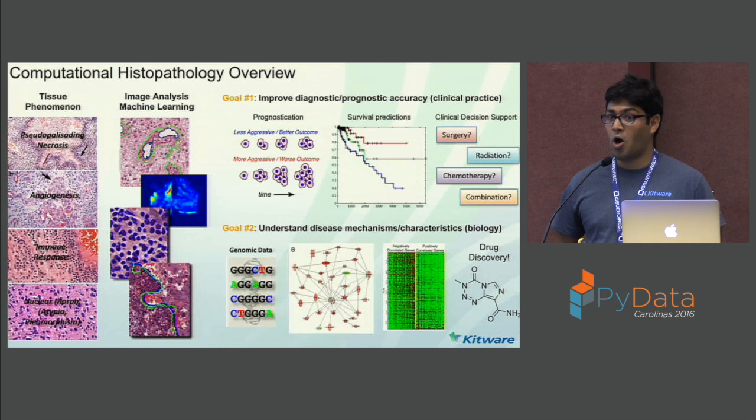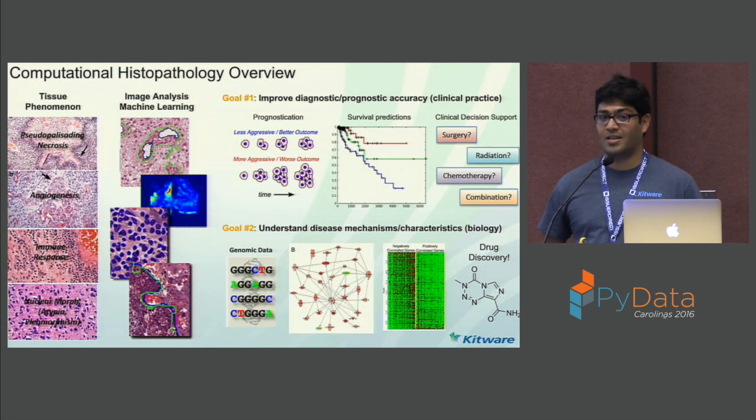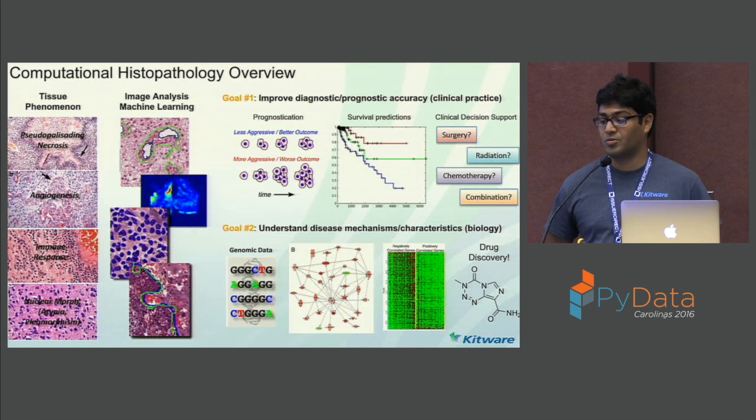With that, you can build decision support tools to recommend what kind of treatment the patient should go through. The second goal is to understand tumor biology itself — you correlate these imaging biomarkers with other genetic variables to understand correlations, and hopefully that will one day lead to developing better cancer drugs.